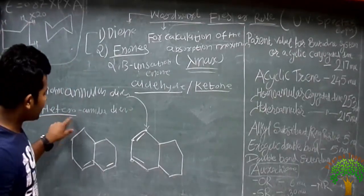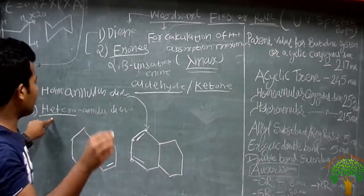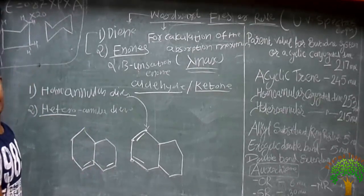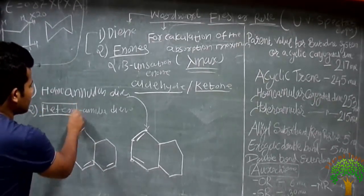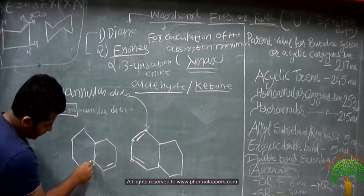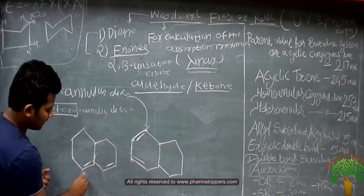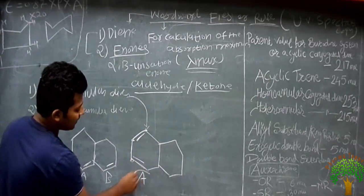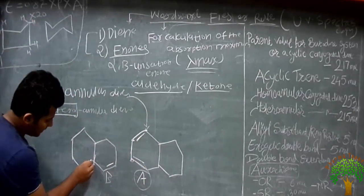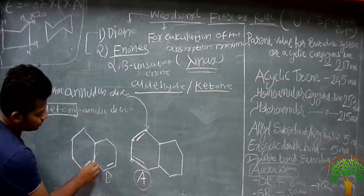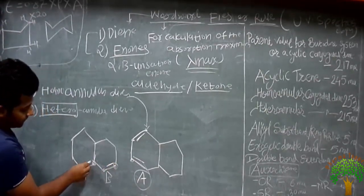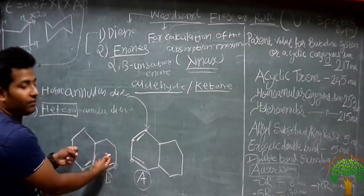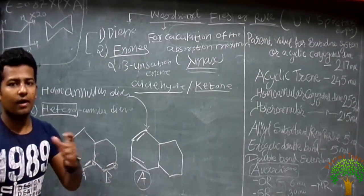In heteroannular diene, one double bond is present in the A ring and one double bond is present in the B ring. The conjugation — single bond, double bond, single bond, double bond — spans across the two rings. This is the conjugation which is present in two different rings, that is why it is called heteroannular diene.